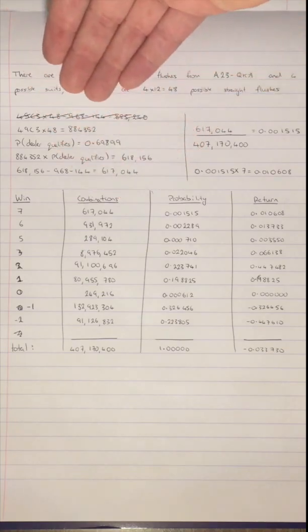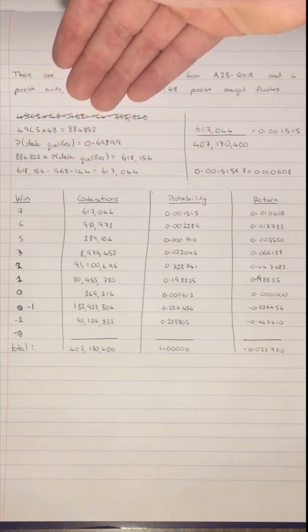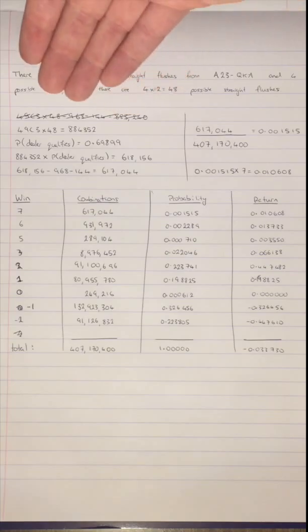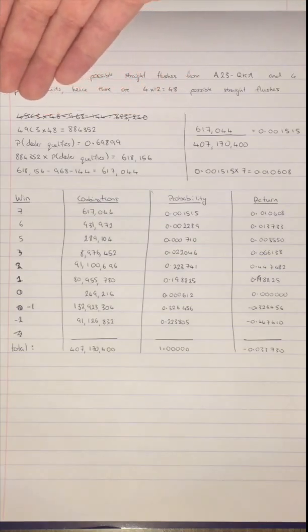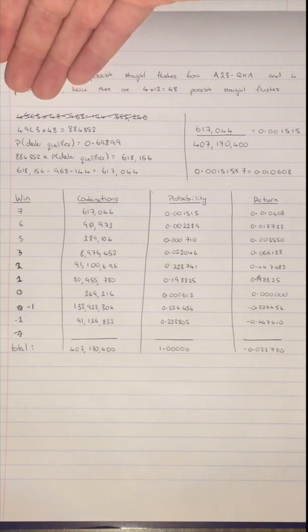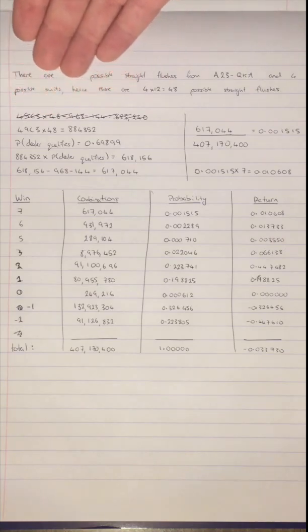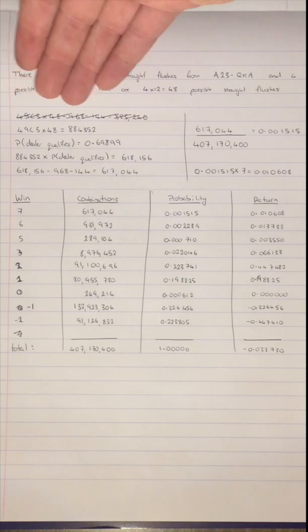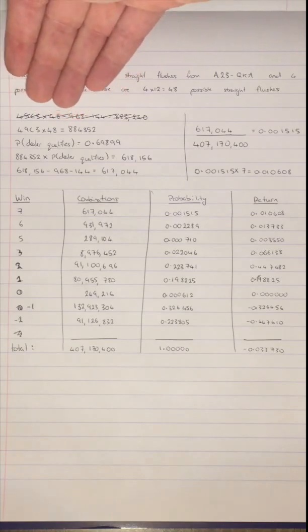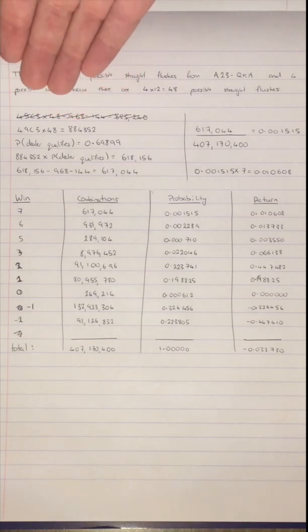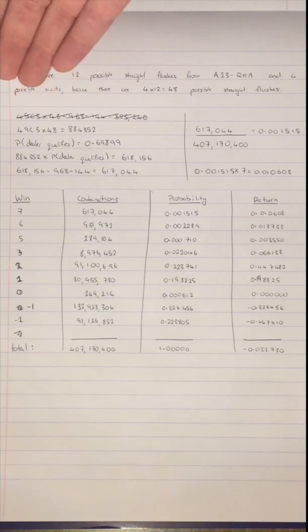I've done a working out over here so that you can see how I've done this. Once the dealer's 3 cards have been taken away, there are 49 choose 3 ways for the player's hand to be dealt and there are 48 possible straight flushes. Therefore, there are 884,352 hands where a player can get a straight flush.